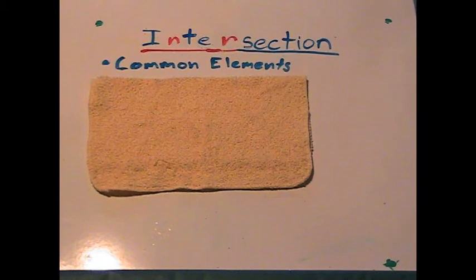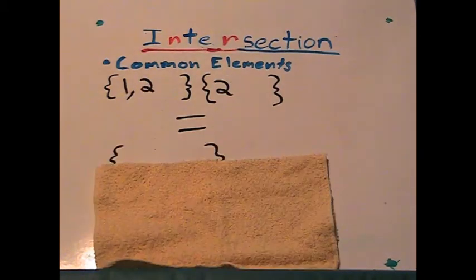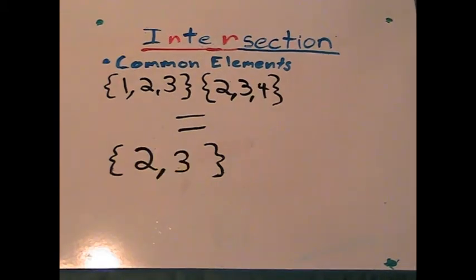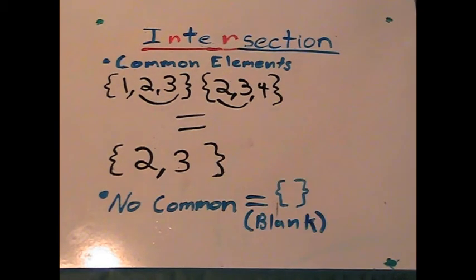Intersection is used to find common elements. For example, a set of 1, 2, and 3, and a set of 2, 3, and 4 have a common element of 2 and 3. But no common elements is a blank set.